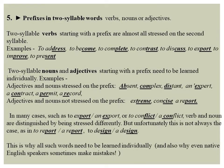Now let's look at prefixes in two-syllable words and the difference depending on whether the word is a verb, noun, or adjective. If a verb has a prefix, it is almost always stressed on the second syllable. Examples: 'to ad-DRESS', 'to be-COME', 'to com-PLETE', 'to con-TRAST', 'to dis-CUSS', 'to ex-PORT', 'to im-PROVE', 'to pre-SENT'. For two-syllable nouns and adjectives with a prefix, there is no single rule — these need to be learned individually.